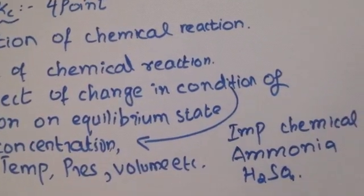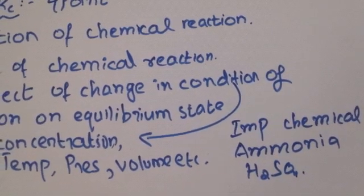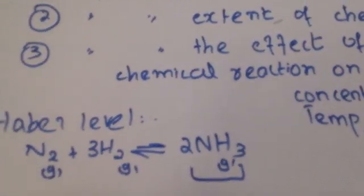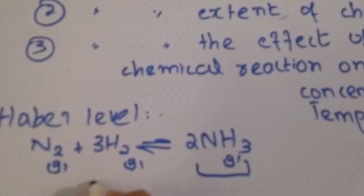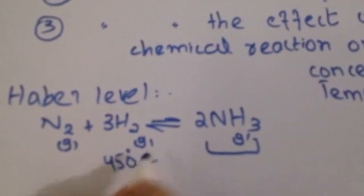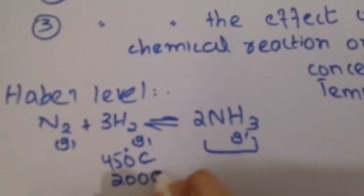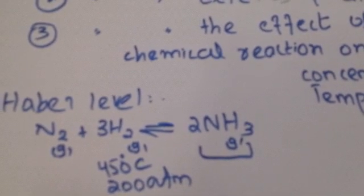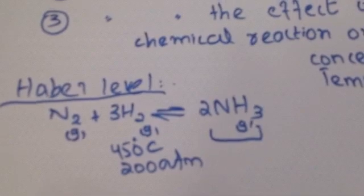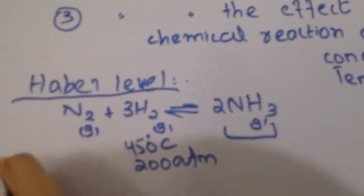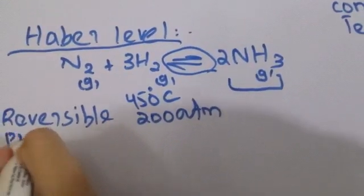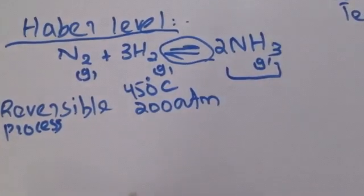Ammonia is produced from nitrogen and hydrogen at 450 degrees centigrade temperature and 280 atm pressure. This process is called the Haber process and it is a reversible process, as shown by the double arrowhead, meaning it happens at equilibrium.